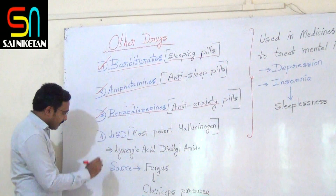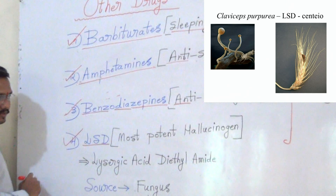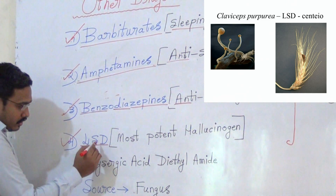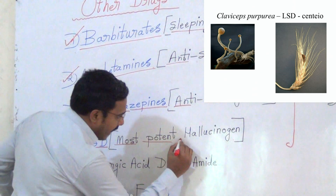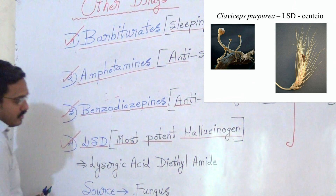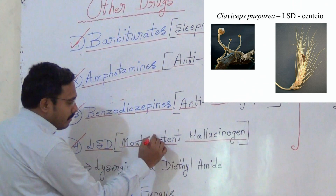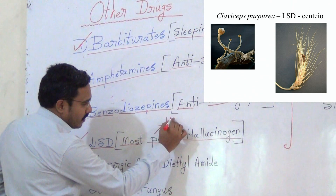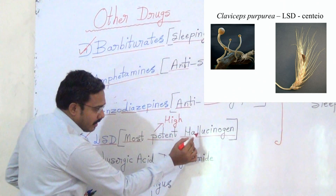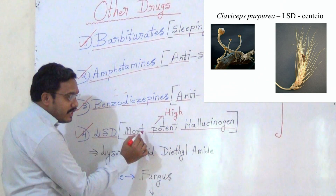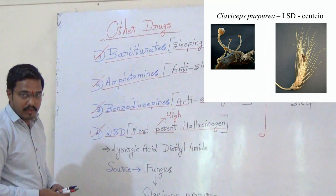The fourth drug is LSD. LSD is the most potent hallucinogen. Most potent means the highest level. We already studied hallucinogens in the last video — these drugs induce hallucinations and take you into a dreamy world. So LSD is the most potent hallucinogen.